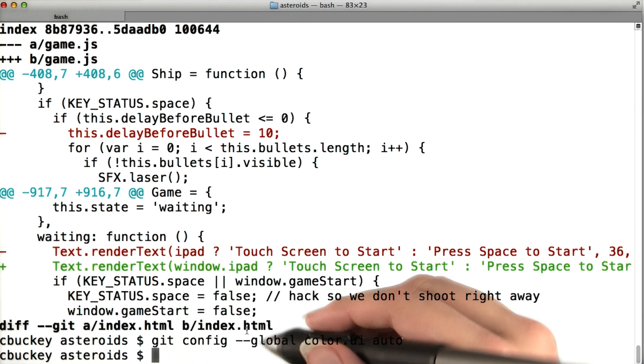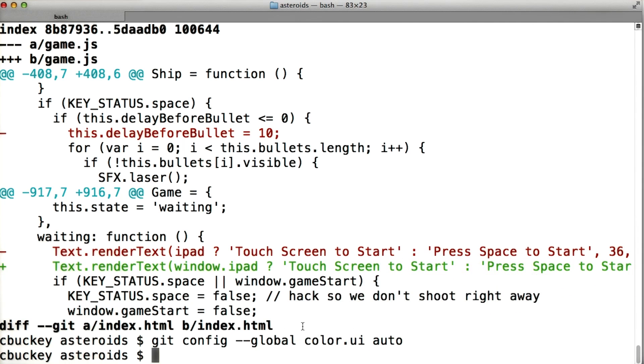The git config command changes your settings in Git, and the --global flag means that it will apply to all of your Git projects, not only this one.